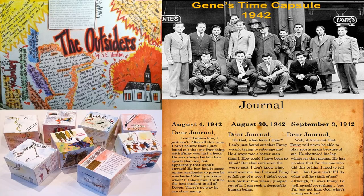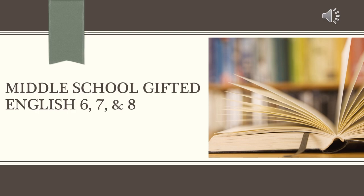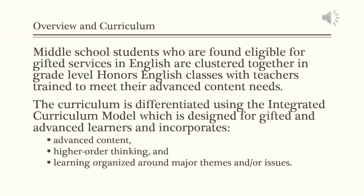Here are some examples of English 8 student products. Middle School Gifted English 6, 7, and 8 — Overview and Curriculum. Middle School students who are found eligible for gifted services in English are clustered together in grade level honors English classes with teachers trained to meet their advanced content needs. The curriculum is differentiated using the integrated curriculum model, which is designed for gifted and advanced learners and incorporates advanced content, higher order thinking, and learning organized around major themes or issues.